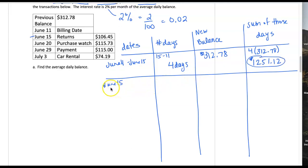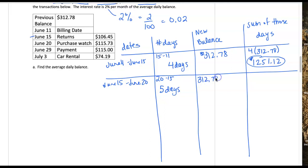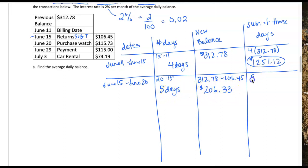On June 15th, the start of this category, we had a return and a return means we subtract $106.45, making the balance go down. So the new balance is $312.78 minus $106.45, giving us $206.33 as the new balance of our credit card. We keep that balance for five days, so for five days at that balance I have a total of $1,031.65 for those five days.